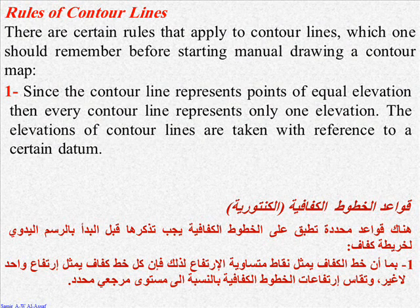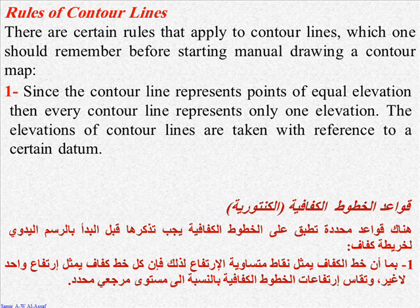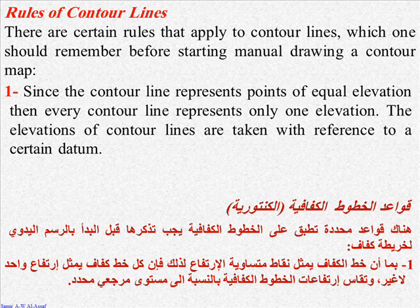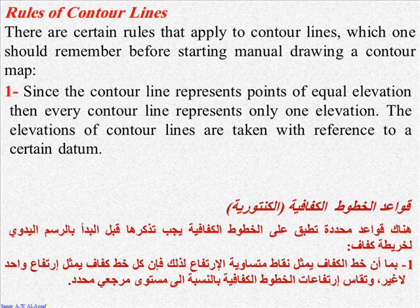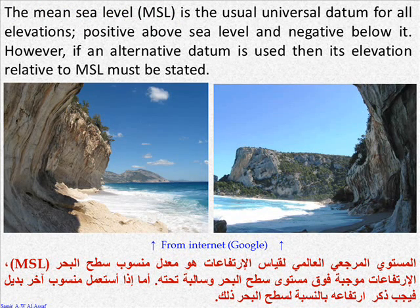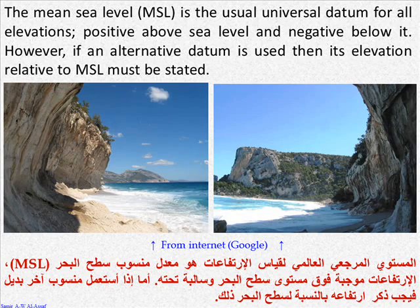There are certain rules that apply to contour lines, which one should remember for starting manual drawing of a contour map. Rule 1: since the contour line represents points of equal elevation, then every contour line represents only one elevation. The elevations of contour lines are taken with reference to a certain datum. Rule 2: the mean sea level, MSL, is the usual universal datum for all elevations — positive above sea level and negative below it. However, if an alternative datum is used, then its elevation relative to the MSL must be stated.